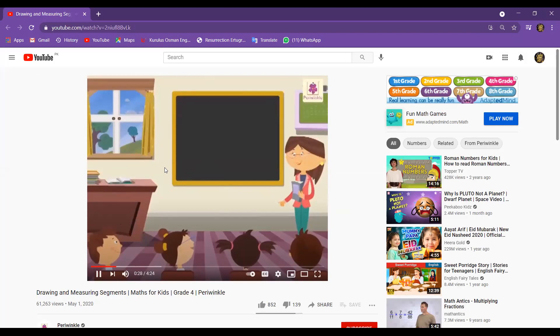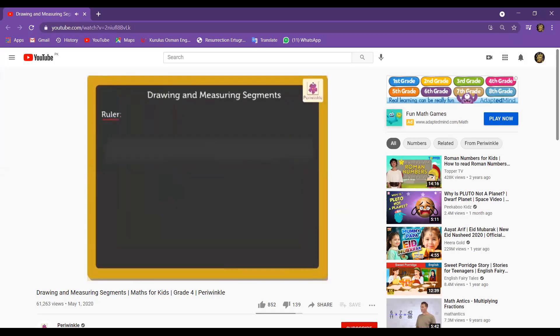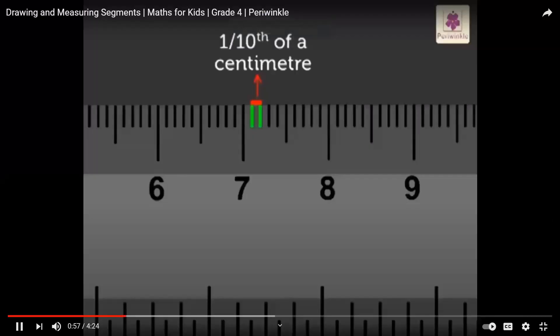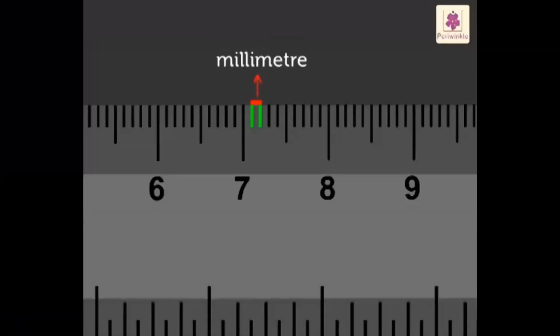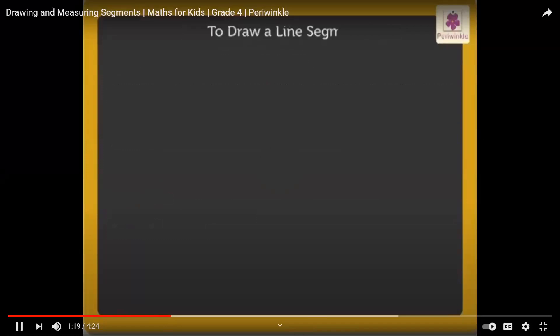To measure line segments, we use a ruler or scale to draw and measure the length of line segments. It has markings in centimeters. Each centimeter is further divided into ten smaller divisions. Each division is equivalent to one tenth of a centimeter. It is called one millimeter. Kids, remember, one meter is equal to one hundred centimeters.